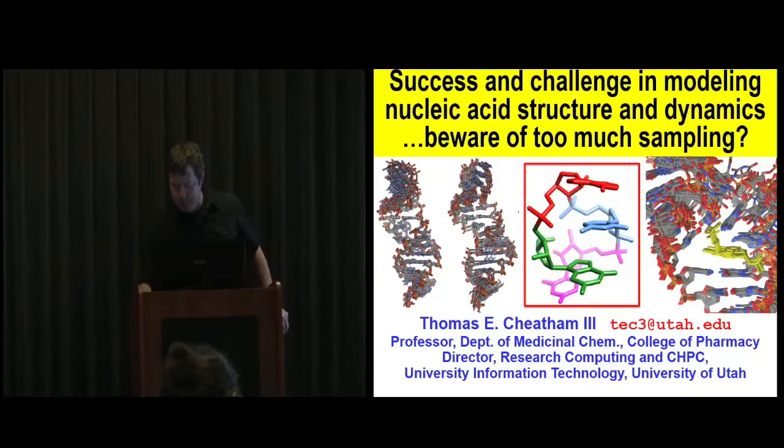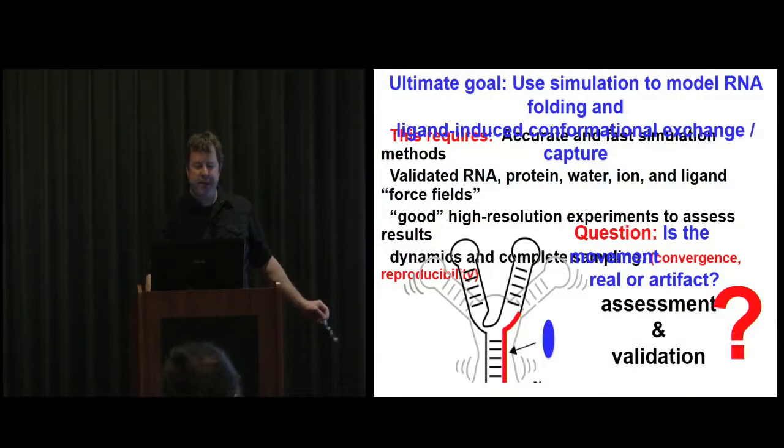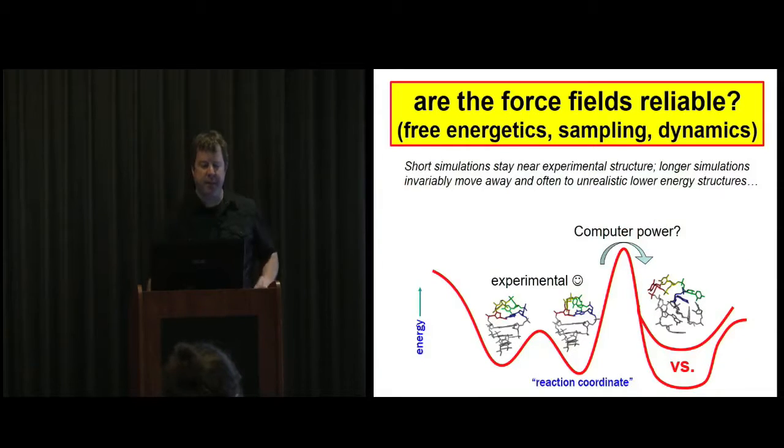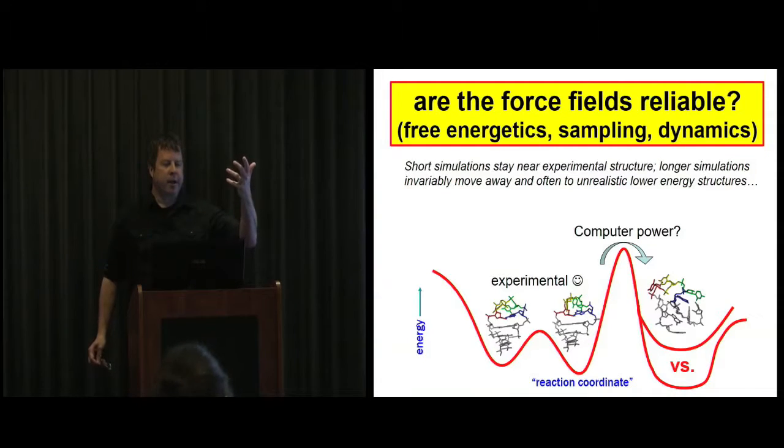What we'd really like to be able to do is understand how RNA changes its conformation and dynamics due to changes in the environment. A good example would be a riboswitch, which when a ligand concentration gets to a certain concentration, a conformational change occurs and it alters gene regulation and does other things in the body.